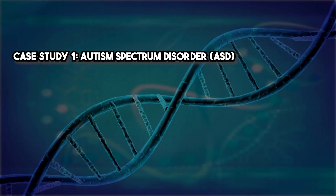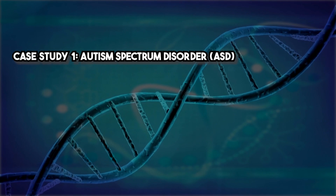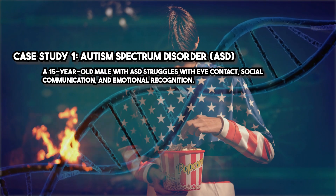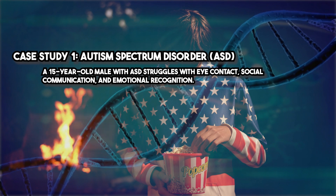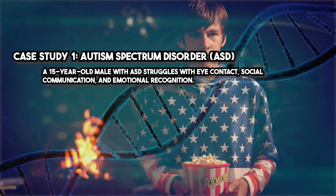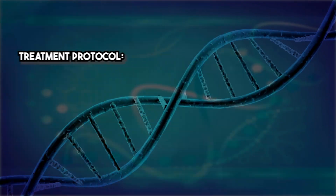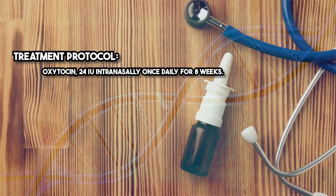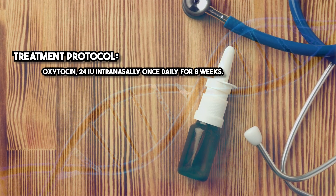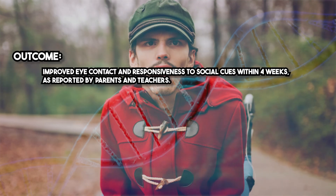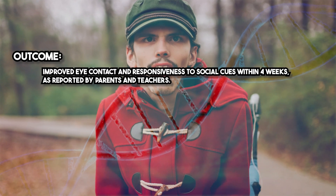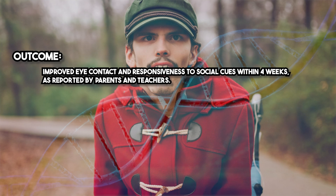Case Study 1 — Autism Spectrum Disorder (ASD): A 15-year-old male with ASD struggles with eye contact, social communication, and emotional recognition. Treatment protocol: oxytocin 24 IU intranasally, once daily for 8 weeks. Outcome: improved eye contact and responsiveness to social cues within 4 weeks, as reported by parents and teachers.